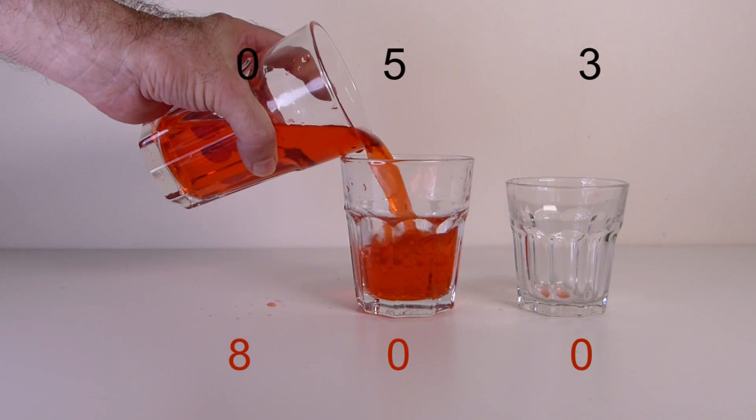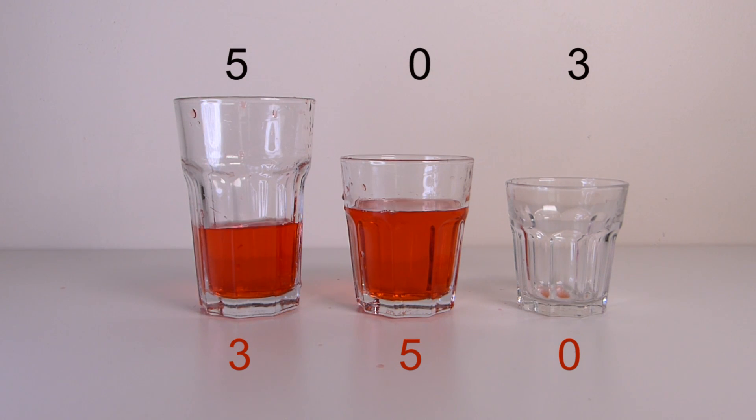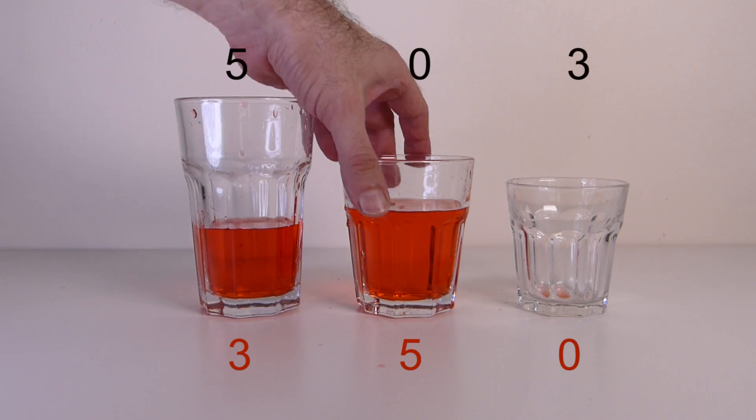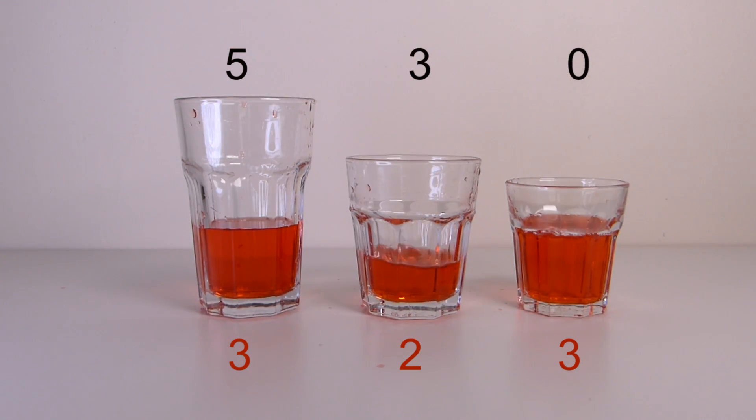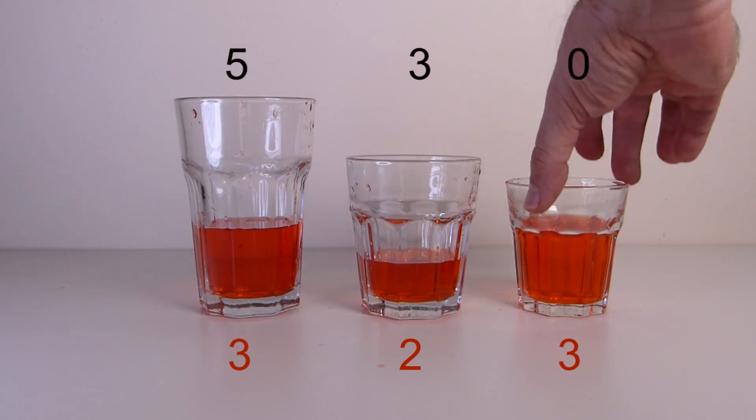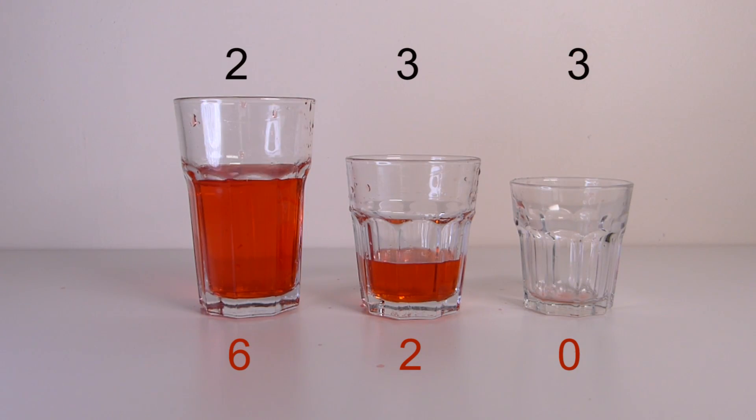If we pour five ounces out of the eight-ounce glass, then we have three ounces and five ounces. And if we pour liquid from the five-ounce glass into the three-ounce glass, then we end up with two ounces left in the five-ounce glass. Combining the three ounces in the large glass and the small glass gives us six ounces in one glass and two ounces in another, which we can rearrange.